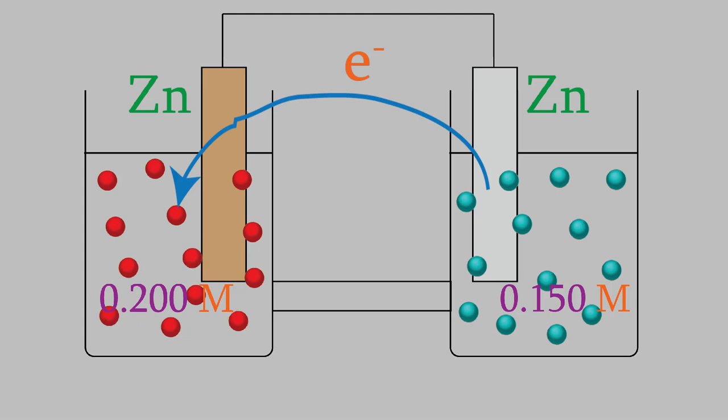If you think about the reactions that are taking place on each side of the voltaic cell, you can see that, on the right side, the zinc metal reacts to produce electrons and zinc ions. When the electrons reach the left side, they react with the zinc ions to form zinc metal. If you think about those two reactions, you'll realize that the reaction on the right side is an oxidation, and the reaction on the left side is a reduction.